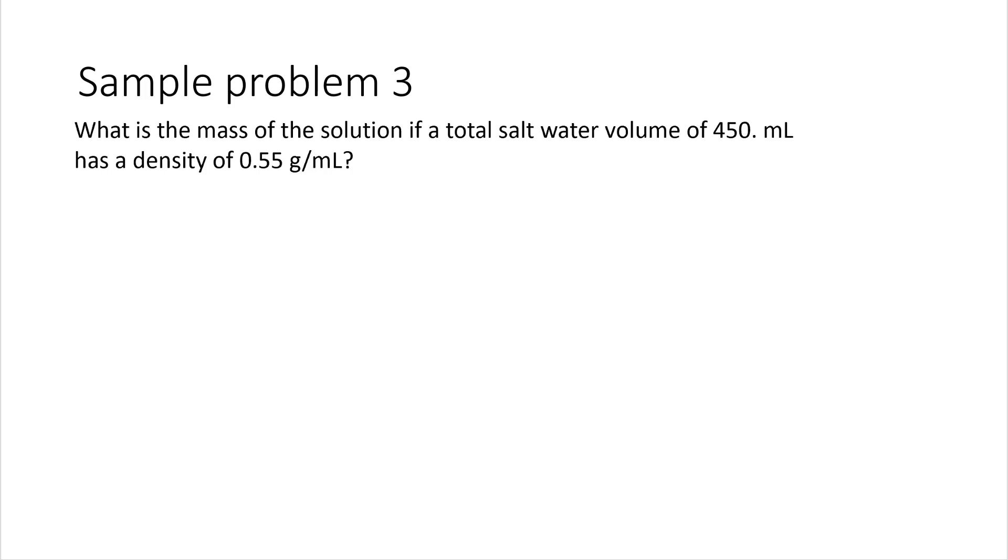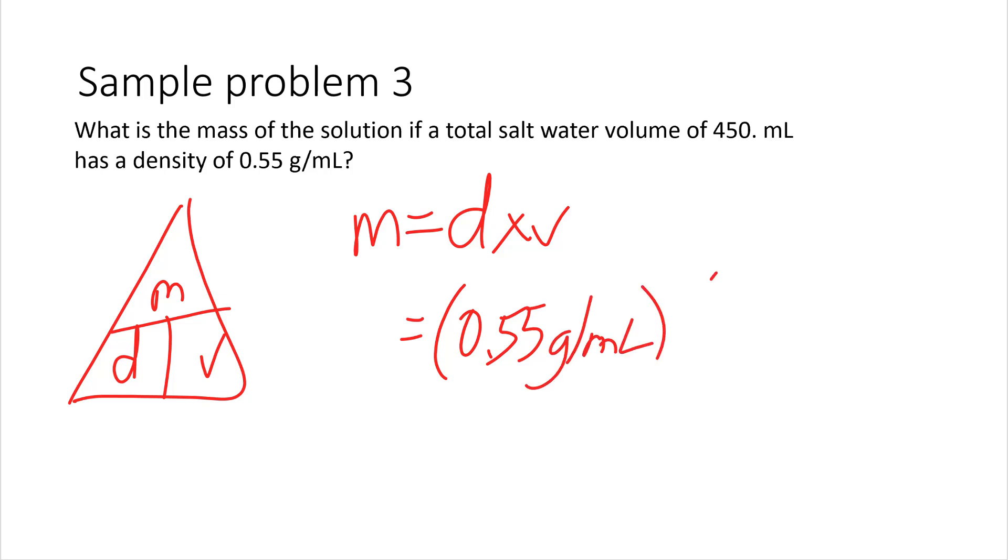Okay. So, last of the problem. If you can get this, go ahead and try it on your own, pause the video, and see if you get it right. Okay. So, what's the mass of the solution if a total saltwater volume of 450 milliliters has a density of 0.55 grams per milliliter? Again, just a minor problem. So, we're going to get our triangle here, M at the top of the mountain, D and V at the bottom. You solve for mass, so it's D times V, and then you plug it in, 0.55. Notice I'm going to write my units too, grams per milliliter, and volume is 450 milliliters.